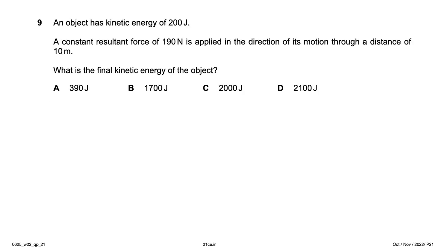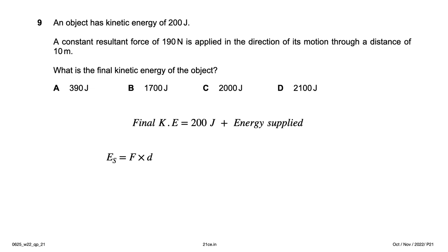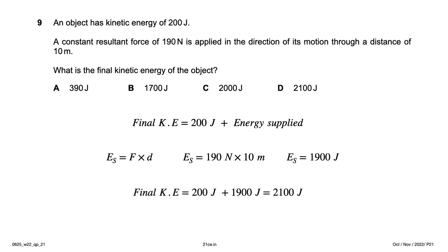An object has a kinetic energy of 200 joules. A constant resultant force of 190 newtons is applied in the direction of its motion through a distance of 10 meters. What is the final kinetic energy? Final KE = initial KE + work done = 200 J + (190 N × 10 m) = 200 + 1900 = 2100 joules, so option D is the right answer.